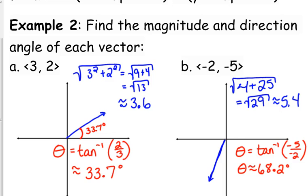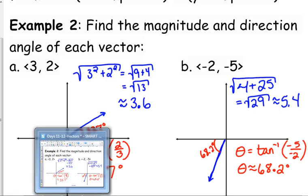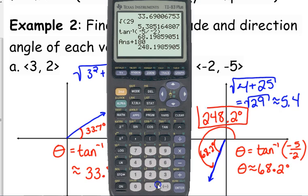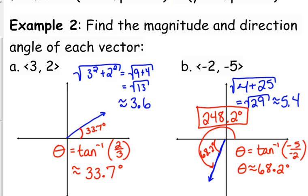Since I'm 68.2 degrees past 180, I need to add 180 degrees to that answer. So the direction angle is 248.2 degrees, not 68.2 degrees. You've got to be careful — this will happen when you're in the third quadrant. It will also happen in the second quadrant because tangent is also negative in the fourth quadrant, so the calculator looks in the fourth quadrant first if the angle is negative. We'll see more examples.